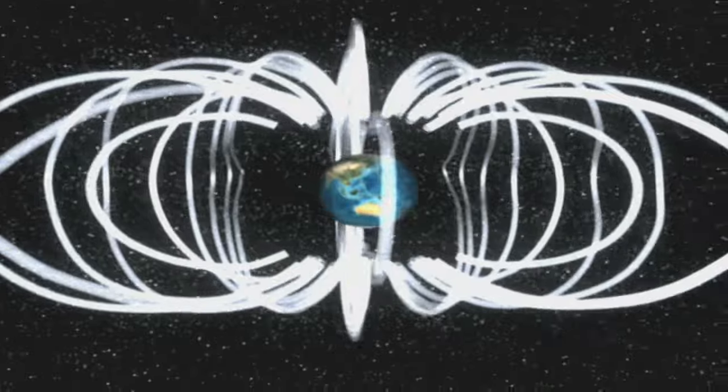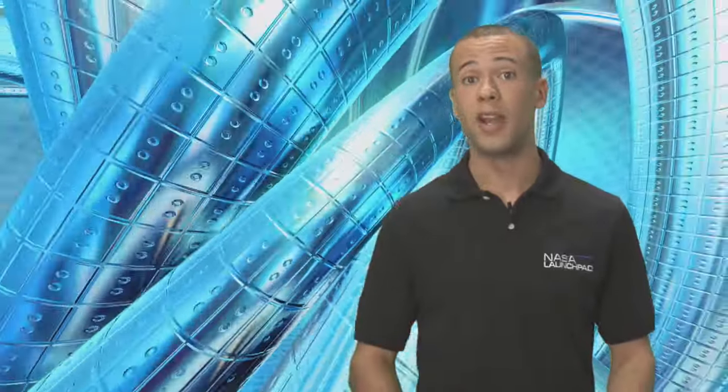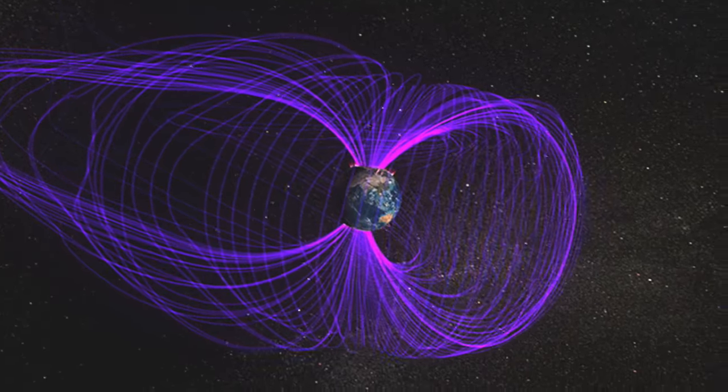Well, we all know that Earth has a north and a south pole. That's how our compasses work. Because of its molten iron core, Earth is actually a giant magnet with poles at both ends. The volume of space within this magnetic field is called the magnetosphere. I know it doesn't look like a sphere, but there's a reason for that.